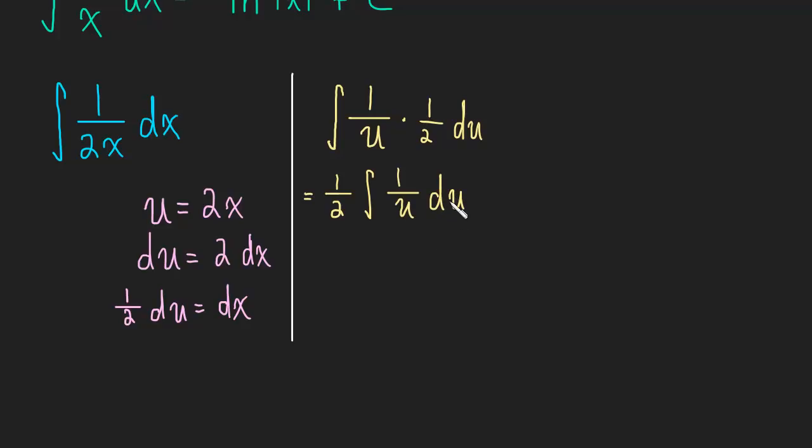The integral of 1 over u du is equal to, well we leave that 1 half out front, and then that integral is just the natural log of the absolute value of u. Of course, plus c.